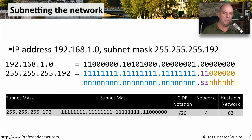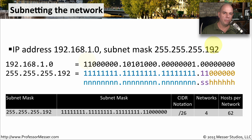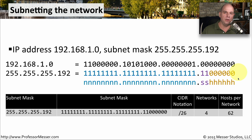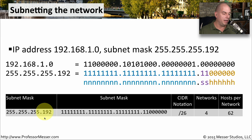Let's look at this in binary. The IP address is 192.168.1.0 with subnet mask 255.255.255.192. I've color-coded it: the original /24 subnet bits are blue, the two additional subnet bits we used are purple, and the remaining host bits are separate. The slash 26 network represented in binary — with those two purple bits — gives us four networks and 62 hosts per network.